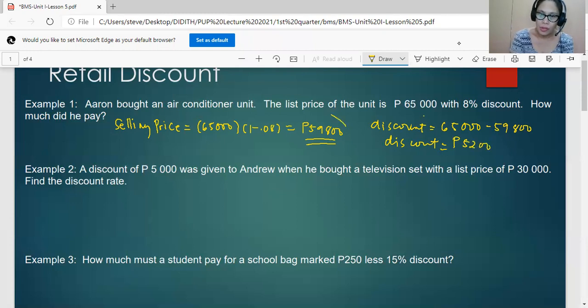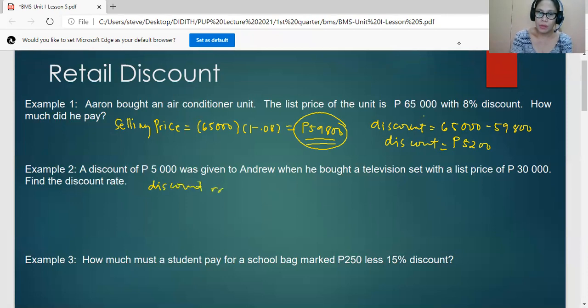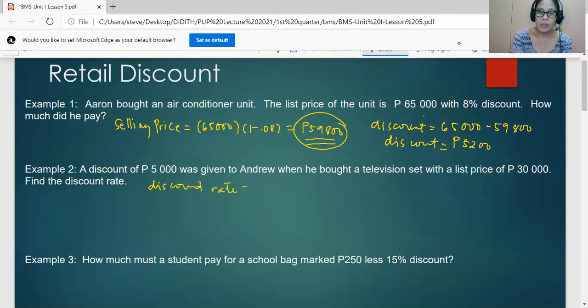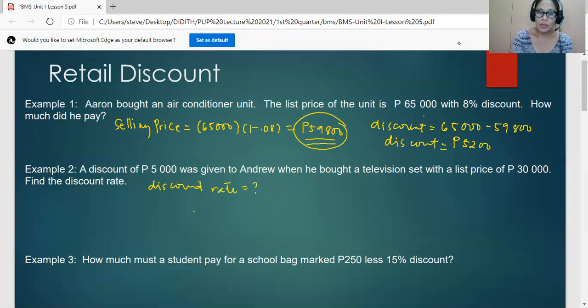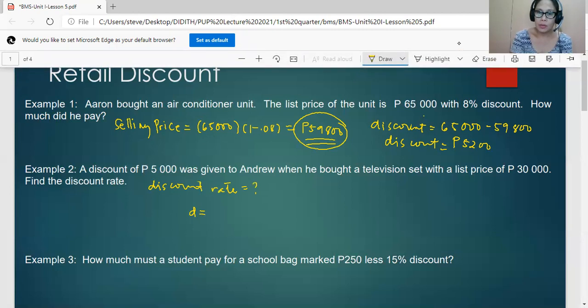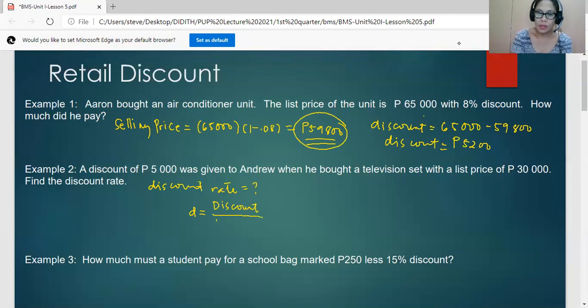For number two, a discount of 5,000 was given to Andrew when he bought a television set with a list price of 30,000. We're asked here for the discount rate. So the discount rate here, let's denote that by small d, is equal to the discount divided by the list price.